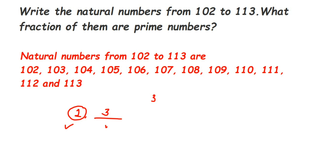Let me take an example of 4. Four goes in the 1 table, the 2 table, and the 4 table — that's more than two tables, so it has more than two factors. Therefore, 4 is not a prime number. If a number has only two factors, then we say it is a prime number.